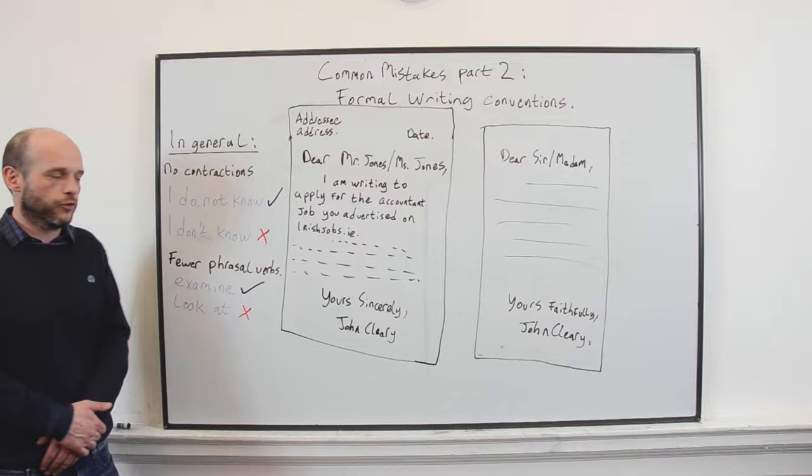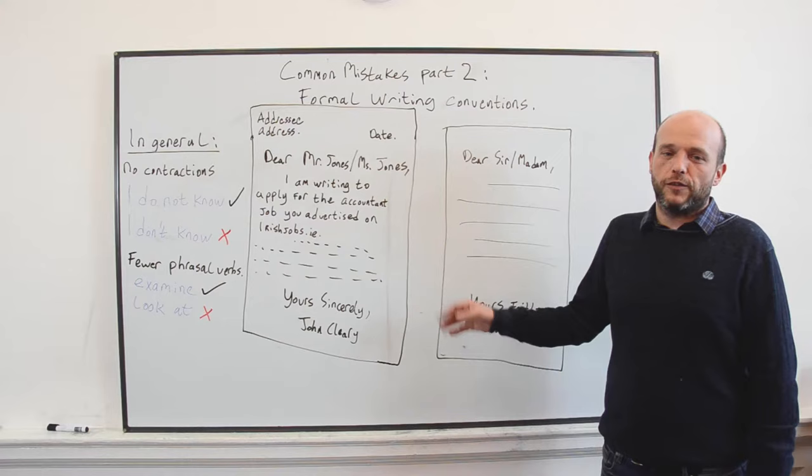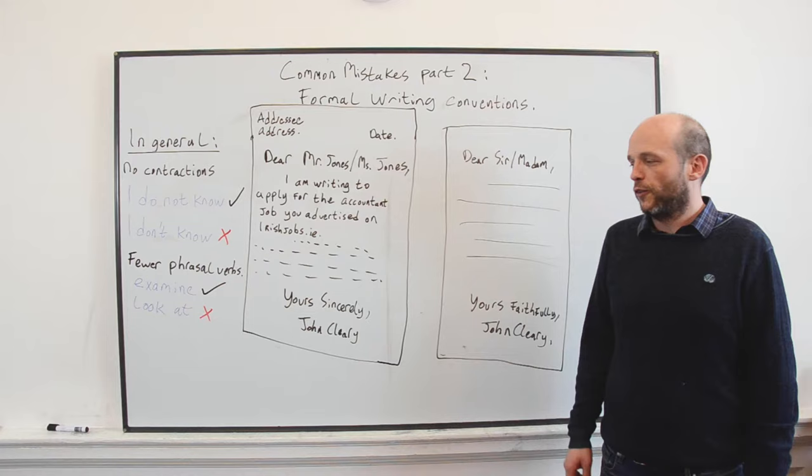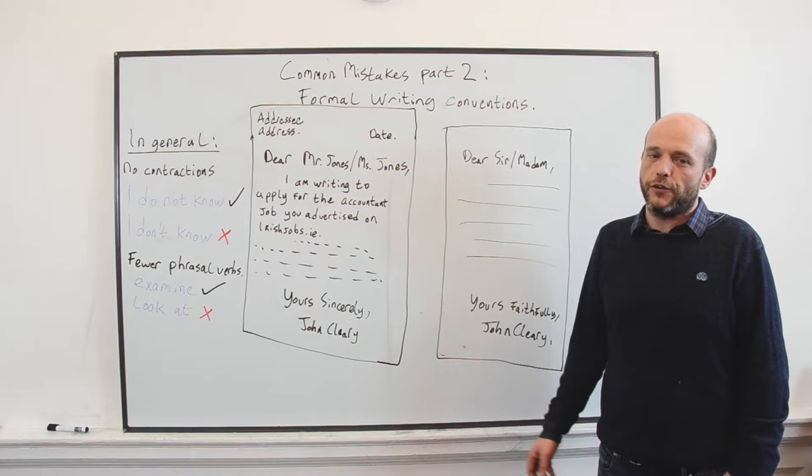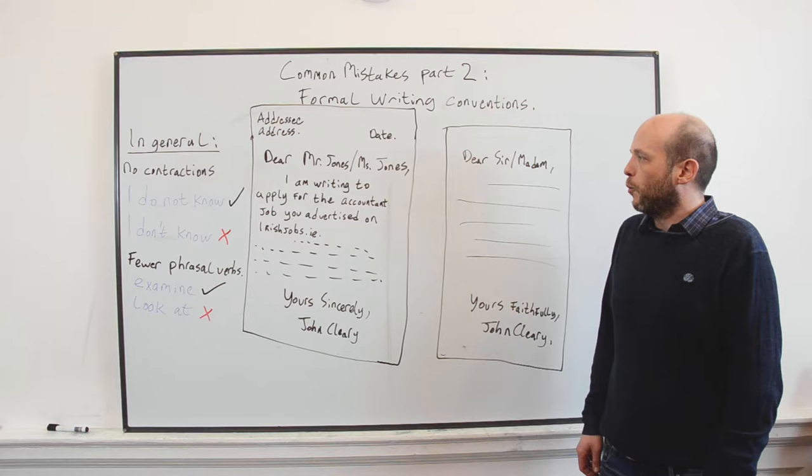And now to the bits that trip people up: the conventions. 90% of a formal letter is simply the conventions of how we lay out the page. When you do an exam, if you're asked to write a formal letter, they give a big portion of the marks for simply getting these things right. So what features does the formal letter in English have?